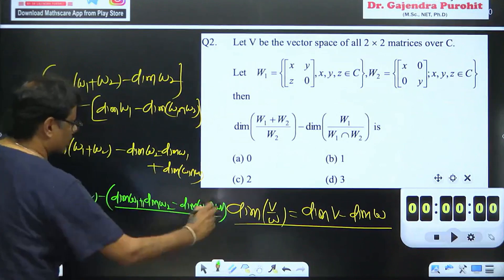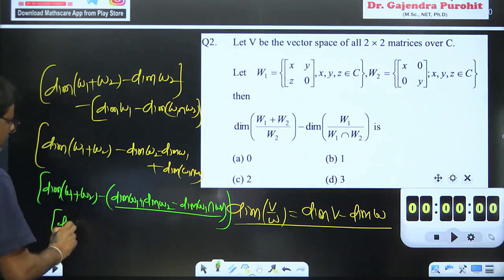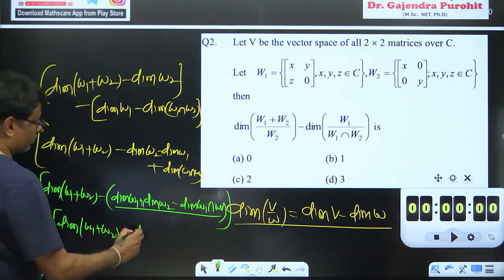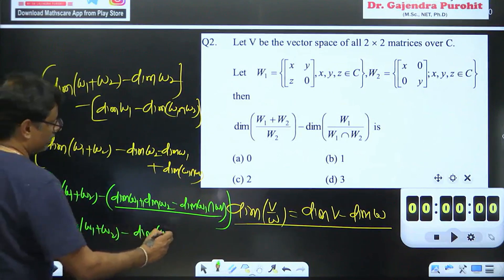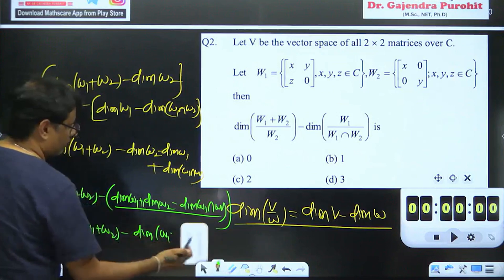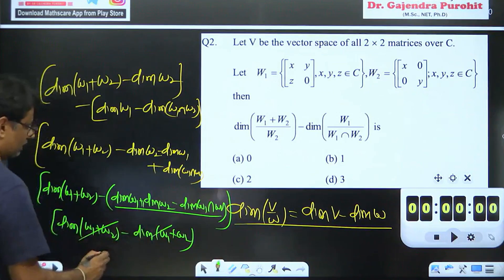We know that this is the formula of dimension of w1 plus w2. This is a formula of w1 plus w2. This formula of dimension of w1 plus w2. We know that this cancel is zero.